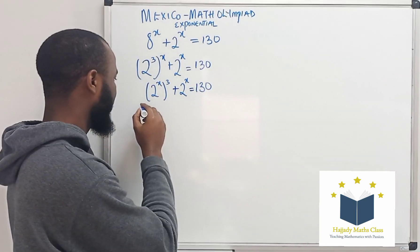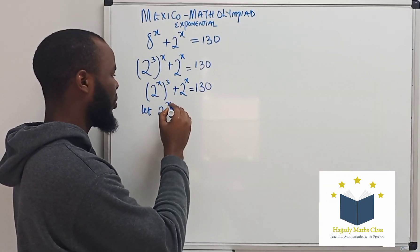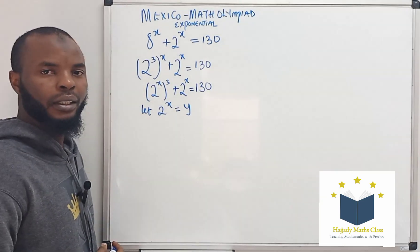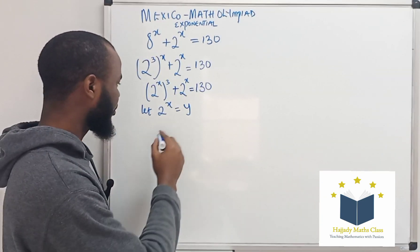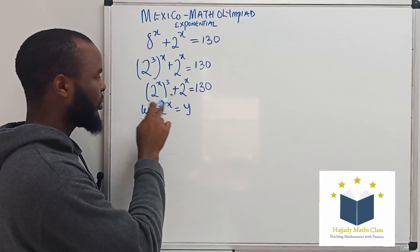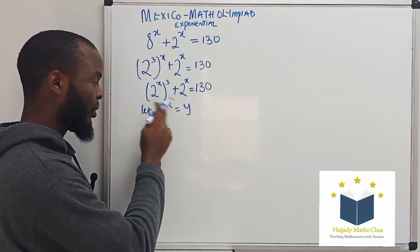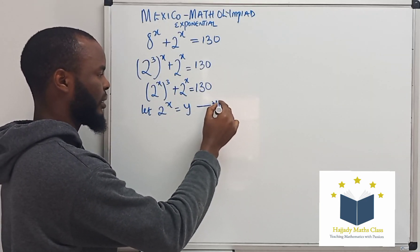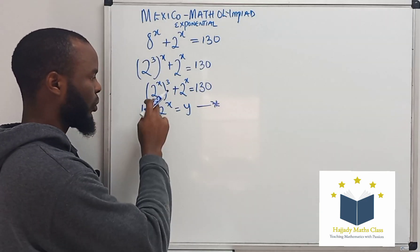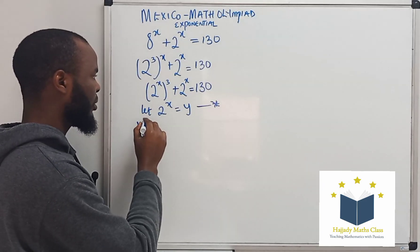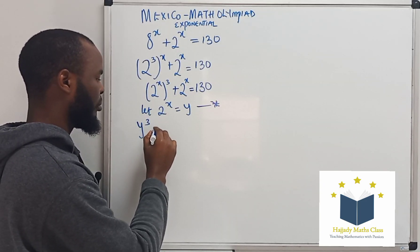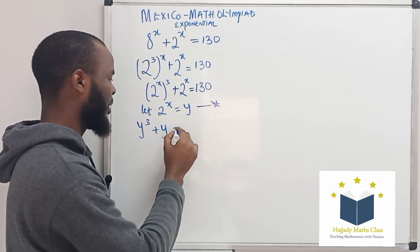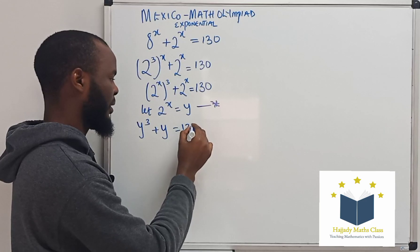Now, next thing, let 2 to the power of x be equal to y. By doing this, I'm going to replace 2 to the power of x with y. Let me asterisk this equation. So here, I'm going to have y to the power of 3 plus y equals 130.